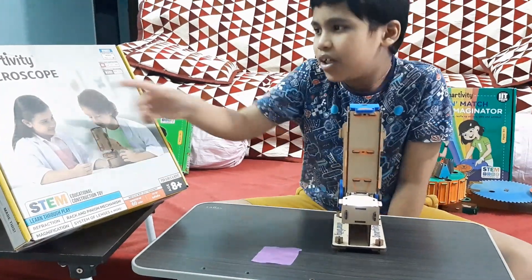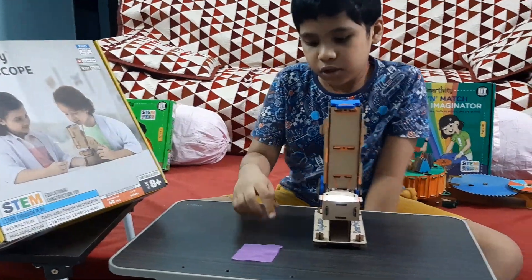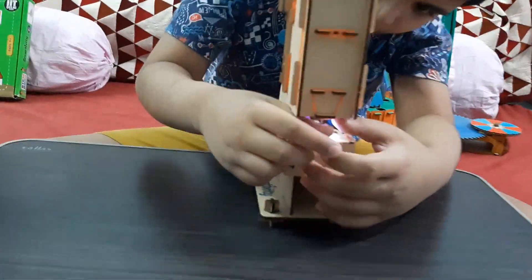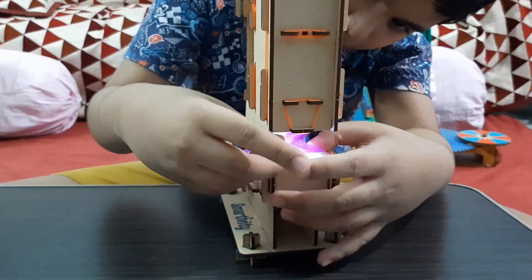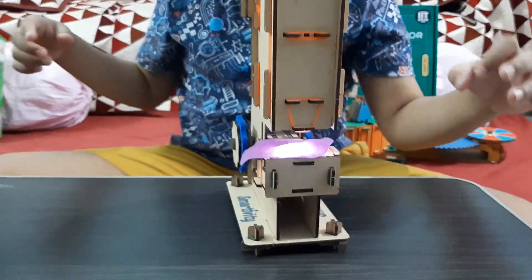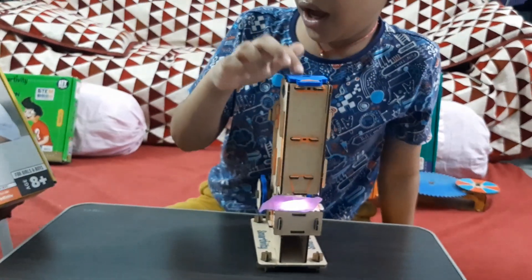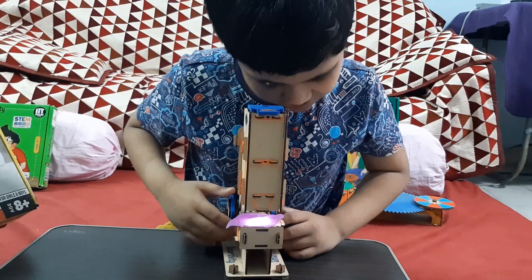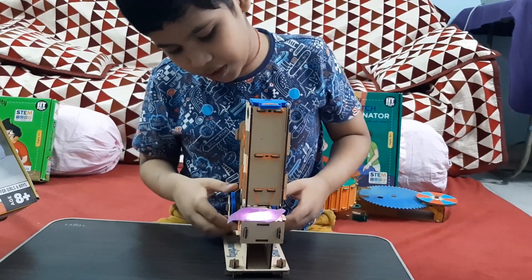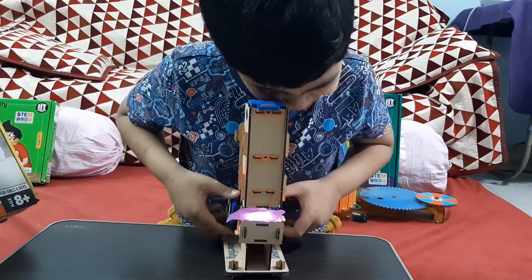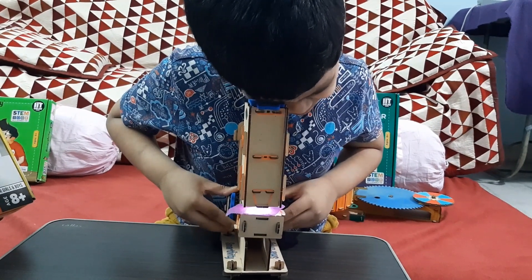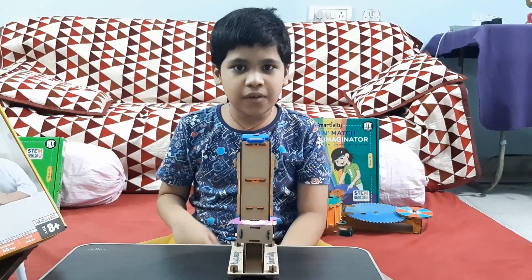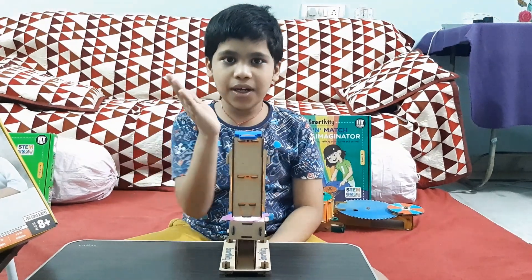This is Smartivity microscope. So let's check this piece of cloth using the microscope. So we first put the cloth here. Then you see it through the eyepiece here. To see it closely, we use this gear and go up. Wow! It's so cool guys. So when we see in the lens, we see a wobbly string.